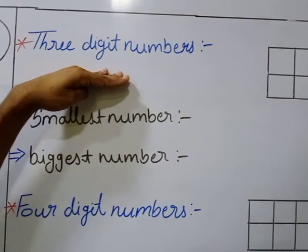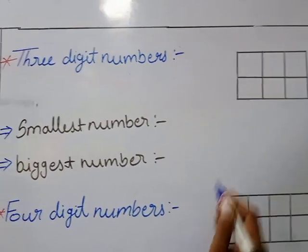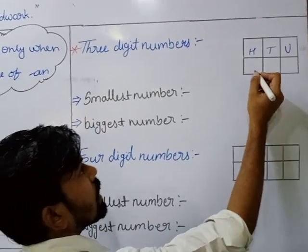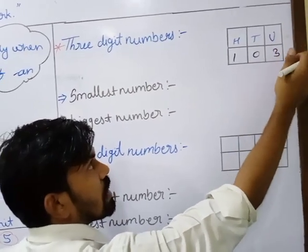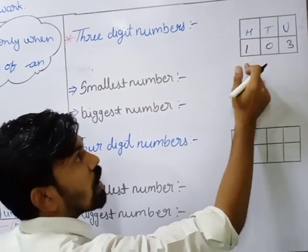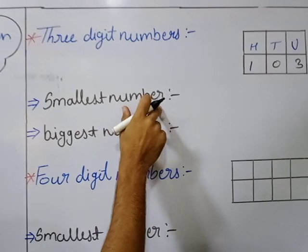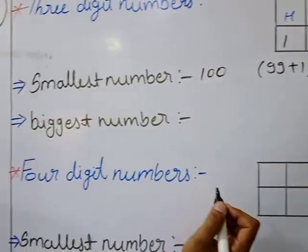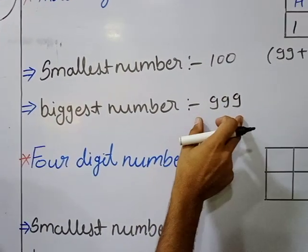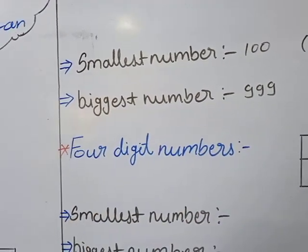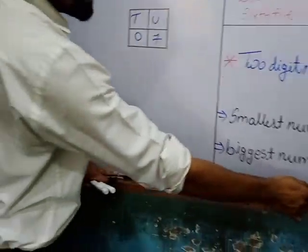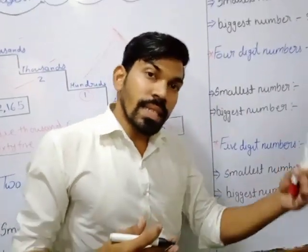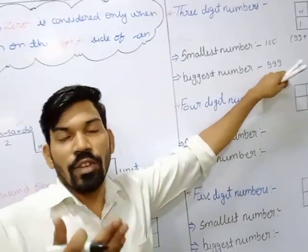Moving to the 3-digit number. A 3-digit number has units, tens, and hundreds — 3 places. Take the number 103: unit is 3, tens is 0, hundreds is 1 — so the number becomes 103. The smallest 3-digit number: the biggest 2-digit number is 99, and 99 plus 1 becomes 100. The biggest 3-digit number is 999. So 1-digit biggest is 9, 2-digit biggest is 99, and 3-digit biggest is 999.